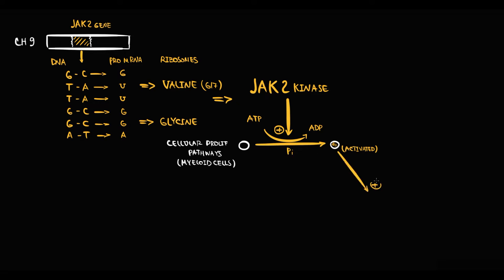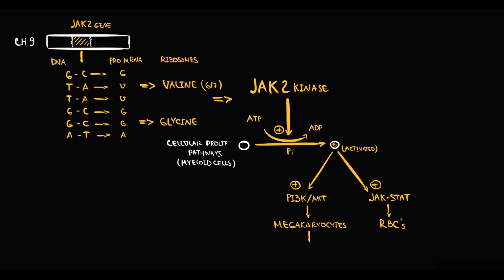By activation of the JAK-STAT pathway, JAK2 kinase stimulates mostly red blood cell production. By activation of the PI3K-AKT pathway, it stimulates the production of megakaryocytes, from which platelets are formed. By activation of the RAS pathway, it stimulates the production of granulocytes and monocytes.